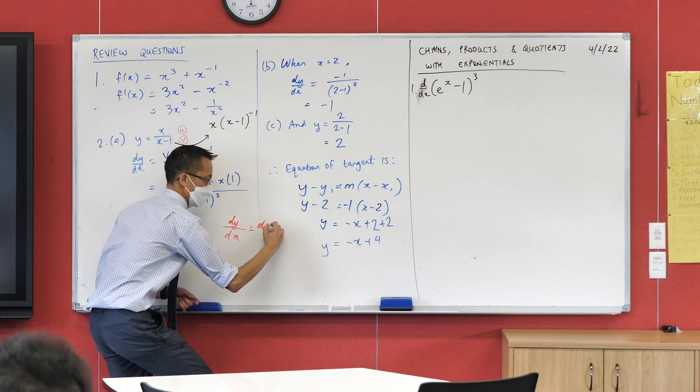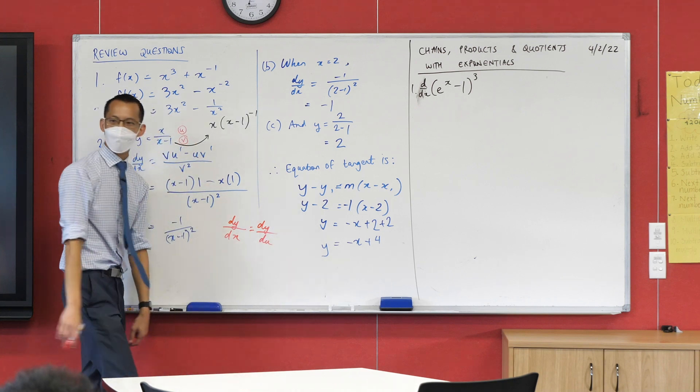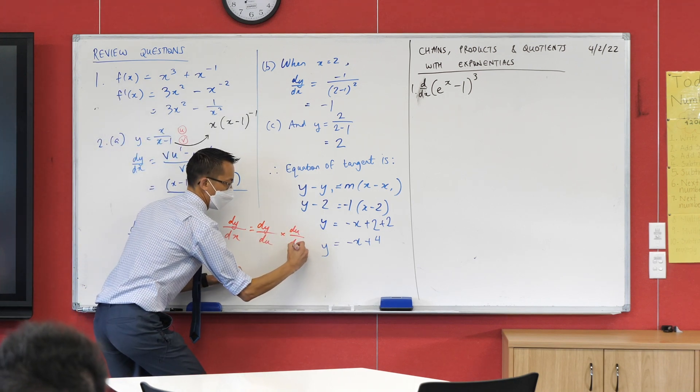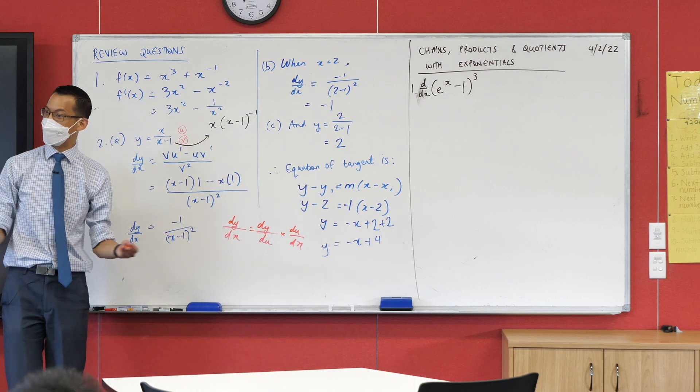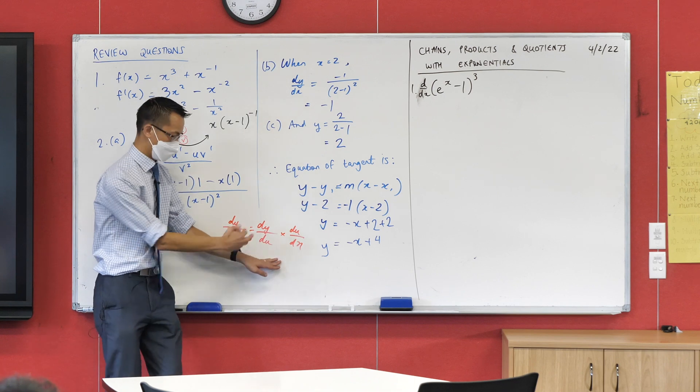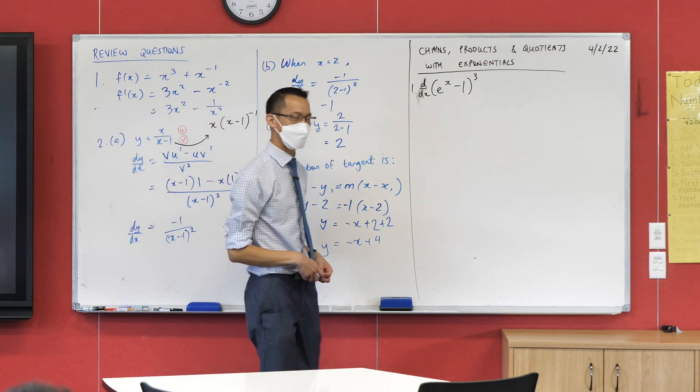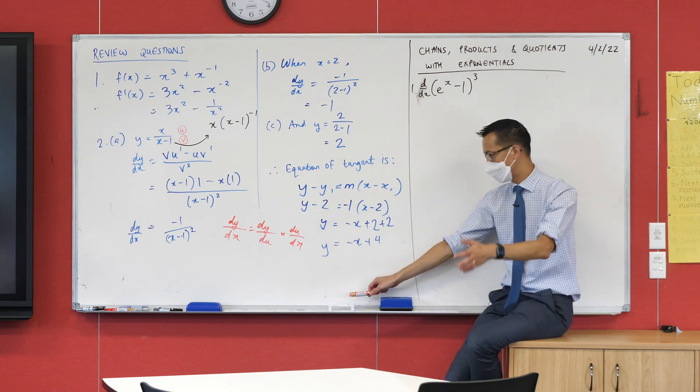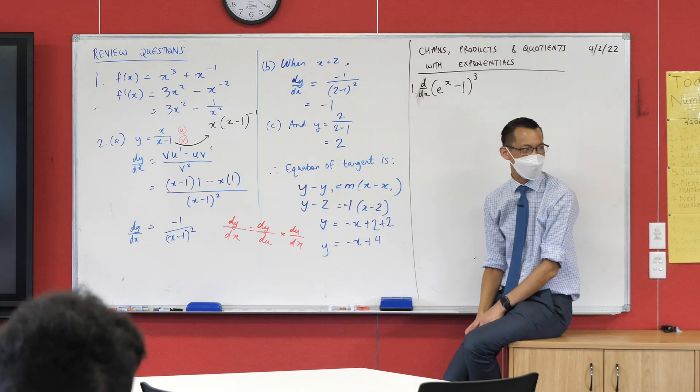Whenever we wanted to find dy/dx, we had to introduce u as our substitution. We said this would let us find dy/du, and then there was this other derivative du/dx, and then things would cancel and we would get the derivative we wanted. That's why this is called chain rule—there's a chain of derivatives that kind of cancel out nicely.